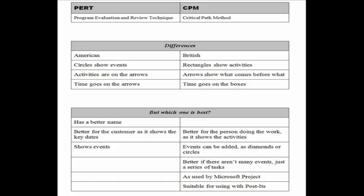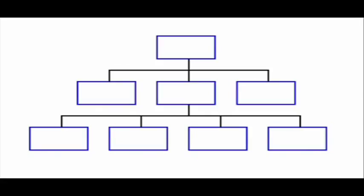And in fact, the decision about whether you're using PERT or CPM is made much earlier, when you're listing the tasks. Because if you list activities in a work breakdown structure, then you're going to end up using CPM. But if you list deliverables and you have a product breakdown structure, then you'll end up using PERT.